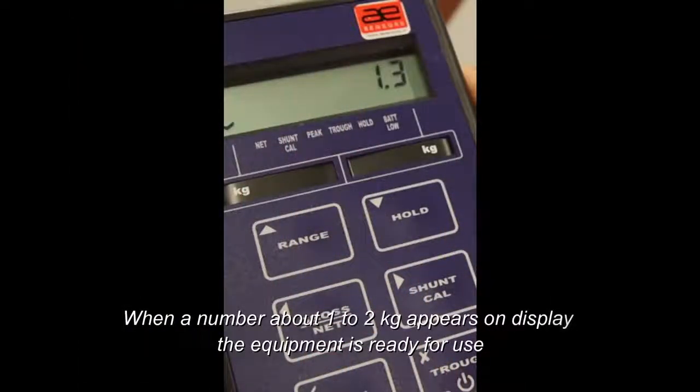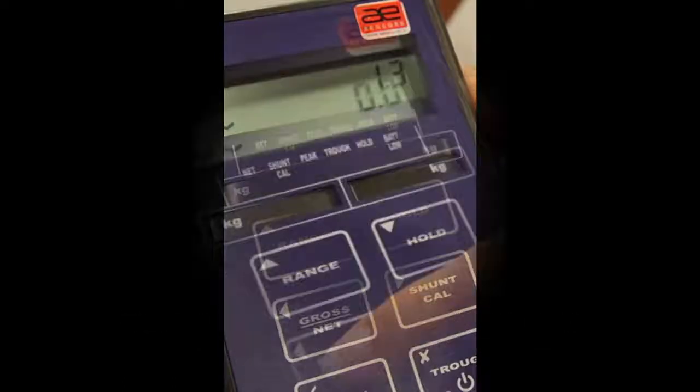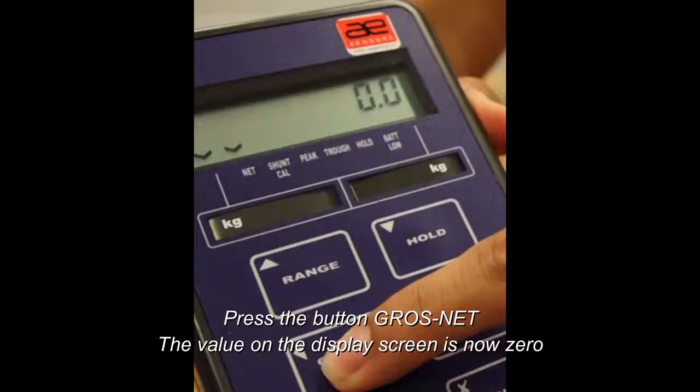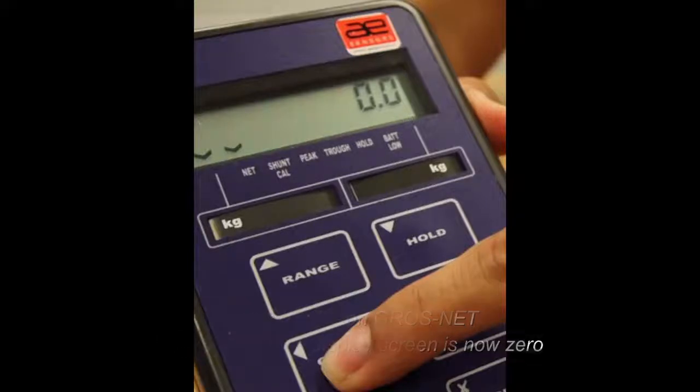When a number about 1 to 2 kilograms appears on display, the equipment is ready for use. Press the button gross net. The value on the display screen is now zero.